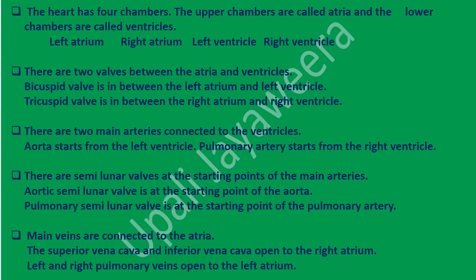There are two main arteries connected to the ventricles. The aorta starts from the left ventricle and the pulmonary artery starts from the right ventricle. There are semilunar valves at the starting point of the main arteries. The aortic semilunar valve is at the starting point of the aorta, and the pulmonary semilunar valve is at the starting point of the pulmonary artery.